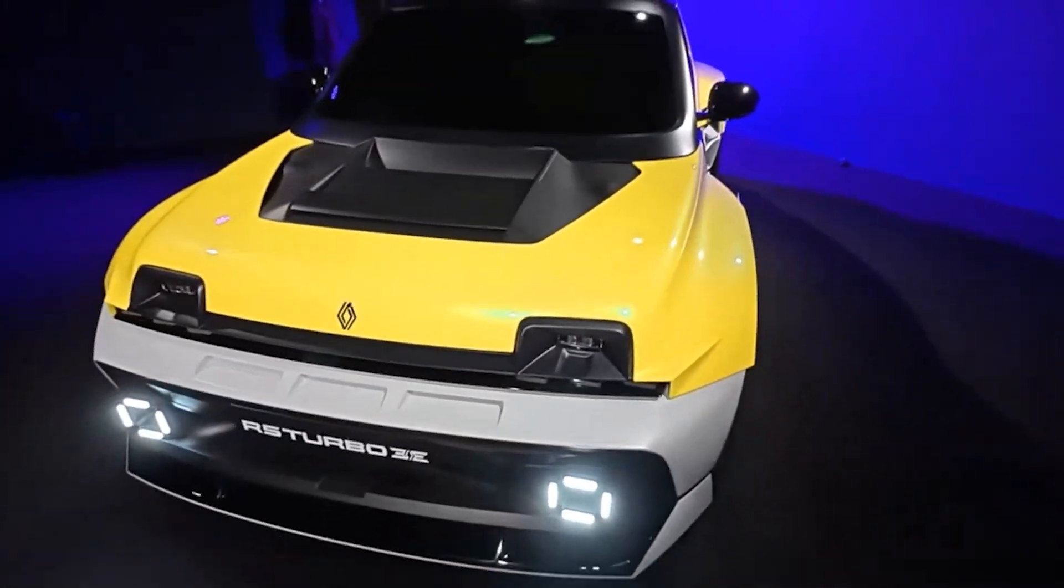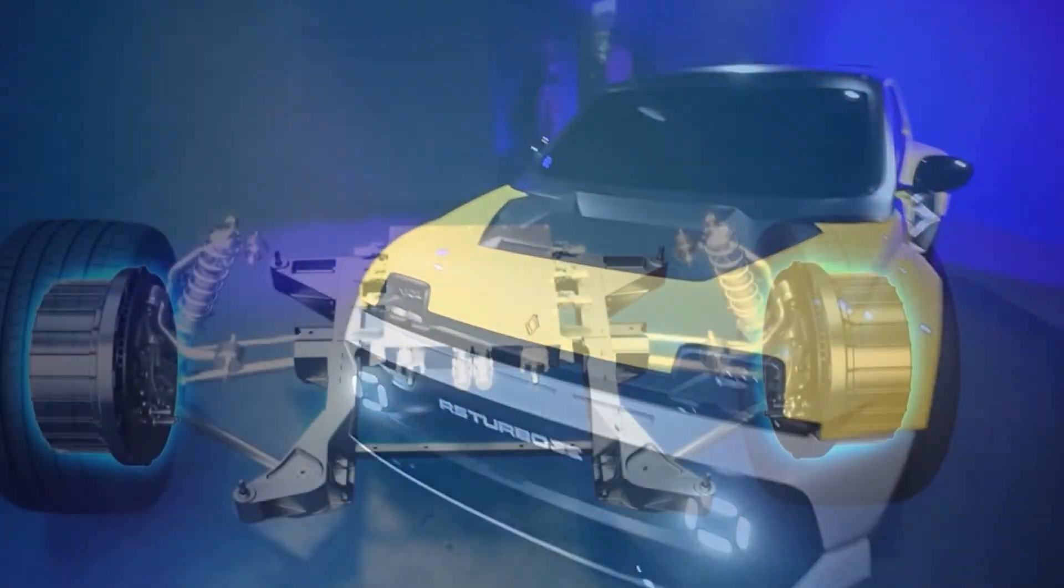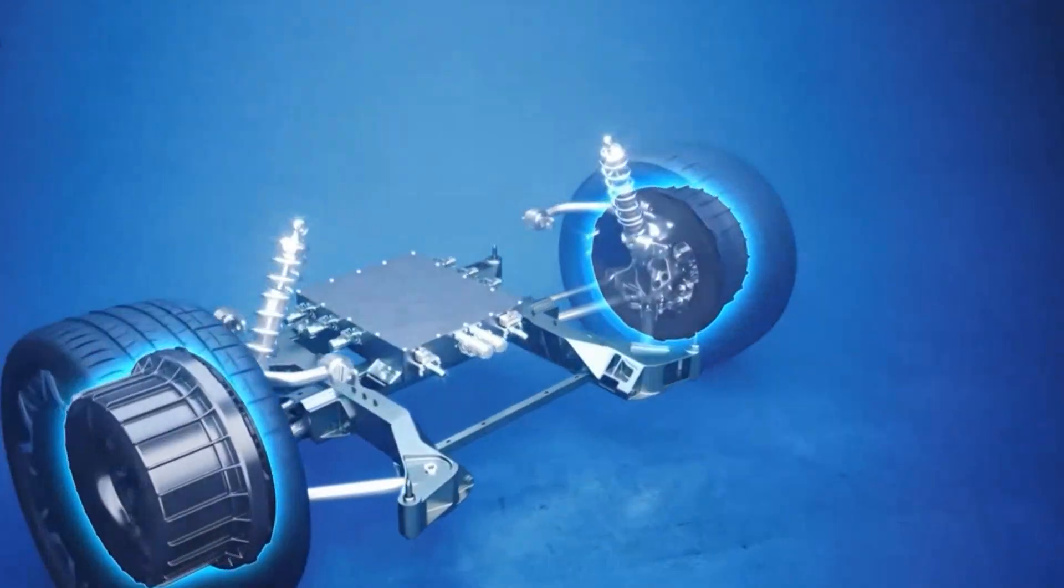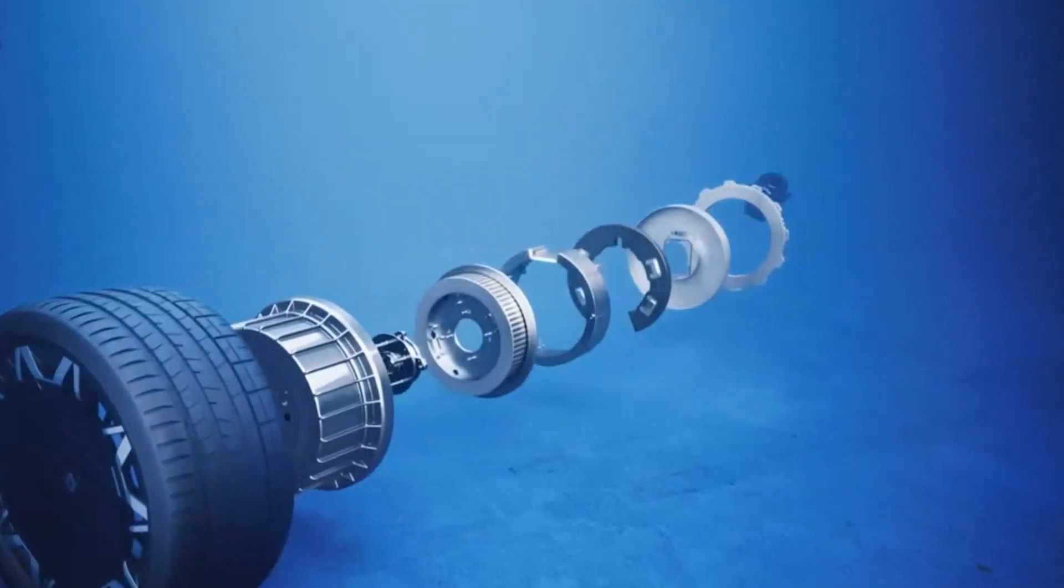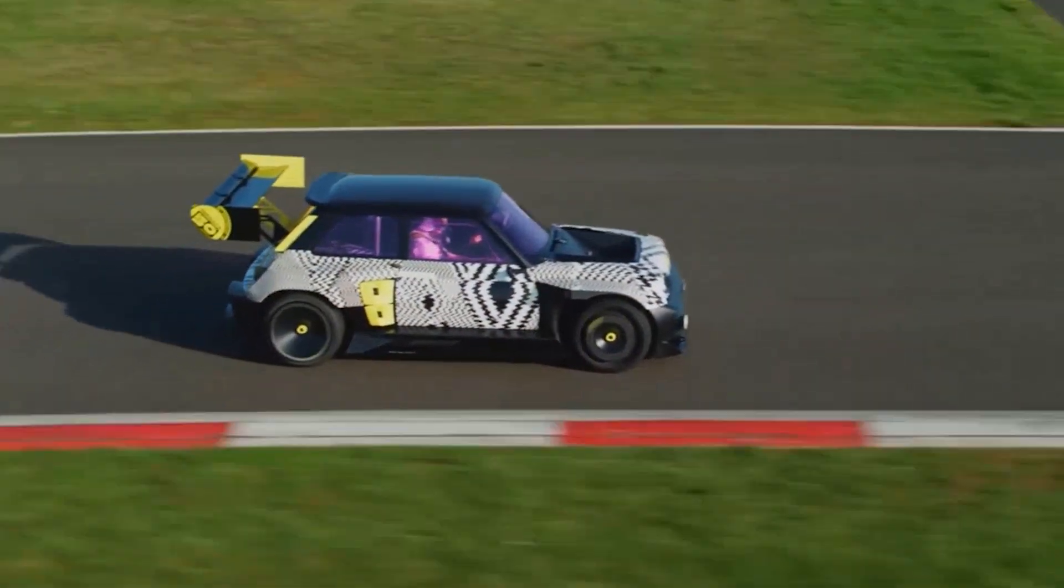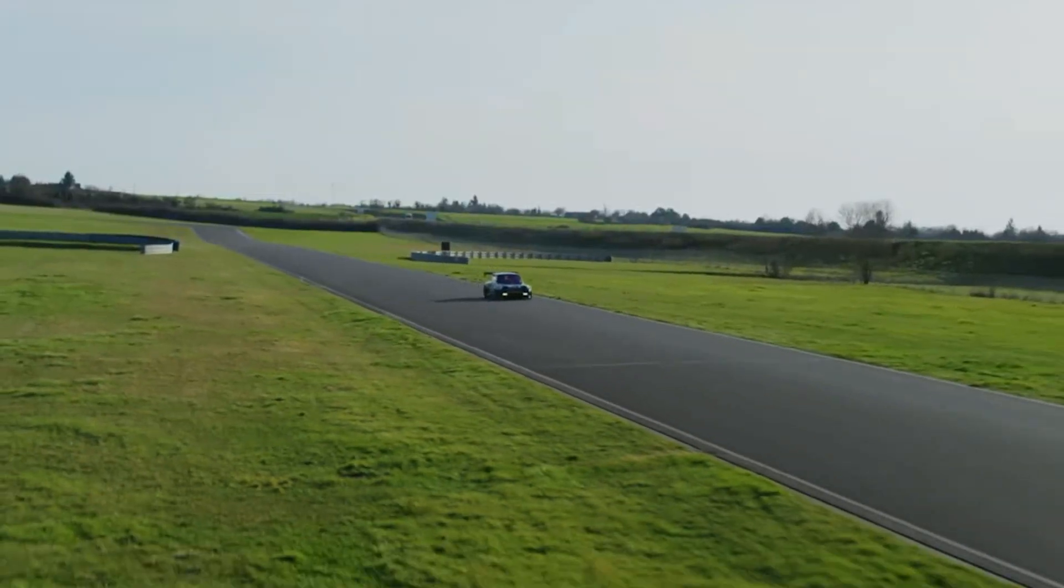Renault even selected an in-wheel motor for the sports version of their new Renault 5 Turbo 3E, showing that performance cars can benefit from this layout. People who tested DeepDrive's prototypes reported that the motor felt smooth, responsive, and stable.